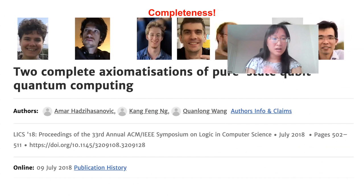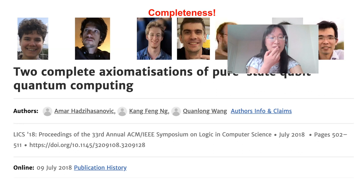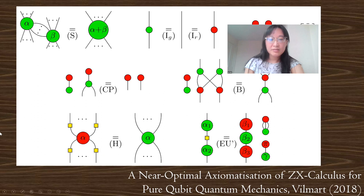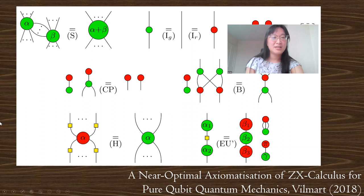It was especially difficult because of parameterized rules with variables like any unitary U, different phase gates, and parameterized quantum circuits. The first result that succeeded in using a finite set of rules to express any equalities of linear maps on any number of qubits came in 2018, with two independent papers using the qubit ZW calculus and the qubit ZX calculus — both proven to have a complete rule set sufficient to derive any equality of any linear maps on qubits.